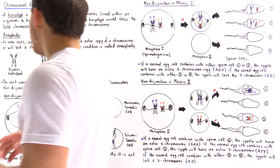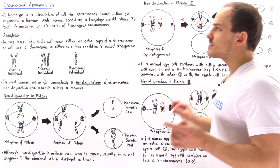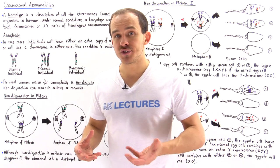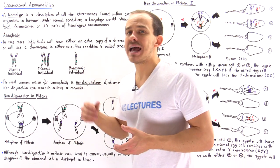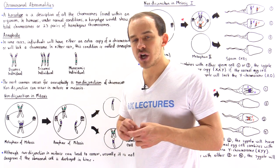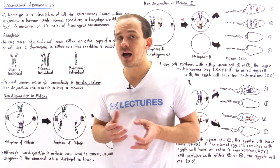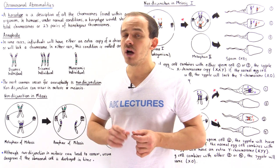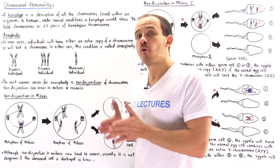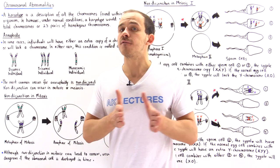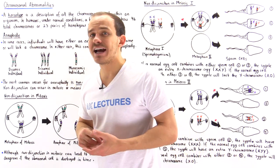Now that we know what a karyotype actually looks like in a normal, healthy human individual, let's now discuss chromosomal abnormalities. One of the common types of chromosomal abnormalities is aneuploidy. In some individuals, within the somatic cells of some individuals, we can either have an extra copy of a chromosome, or we can have one less chromosome than we normally have. So we can either have 47 chromosomes or 45 chromosomes, and in either case, these conditions are known as aneuploidy.